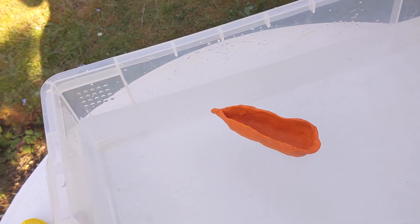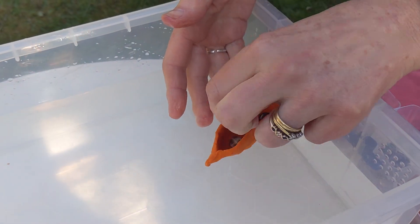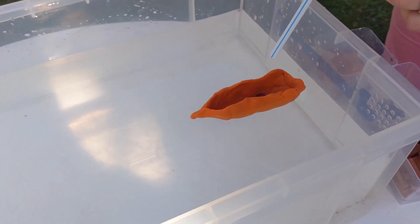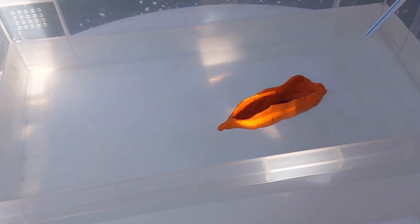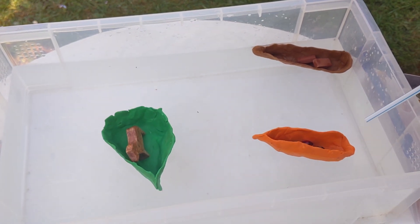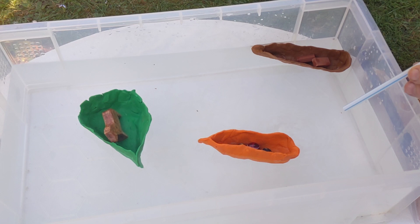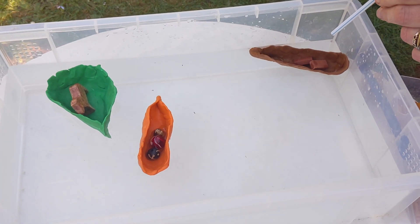You can now test the effectiveness of your design using your straw. Blow it across the water. If it travels smoothly and in a straight line, well done, you have designed a streamlined boat. If there's more than one of you, compare your designs, noticing which one is more successful and why. Pause this video while you test your boats.